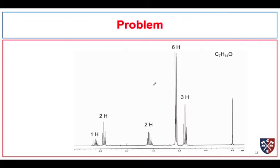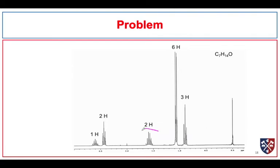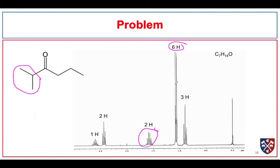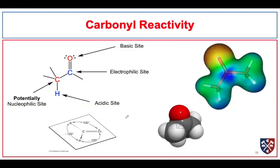Here's one more problem. A doublet integrating for six hydrogens immediately suggests an isopropyl group. Then we look for the corresponding single proton, and we know it's on the alpha carbon because it appears around 2.5 ppm. The other alpha signal is also expected around 2.5 ppm as a triplet, right there, and then the remaining signals can be straightforwardly assigned.